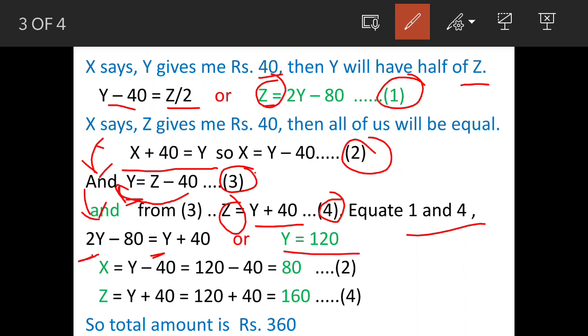Substitute value of Y in equation 2, so we get X = 80. And substitute value of Y in equation 4, we get Z = 160. When we add these 3 terms we get total as 360. This is our answer.